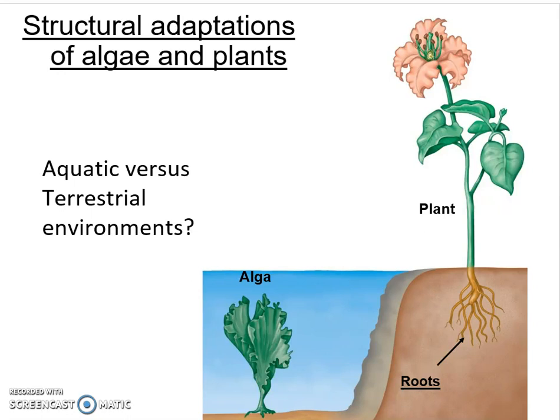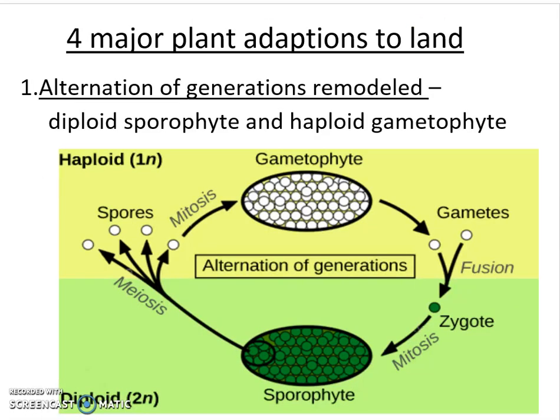At the same time, the support provided by the water for the algae is gone, and you're going to run into a problem with water. You're going to have to come up with adaptations that would allow the algae to survive on land. Looking at the evidence from fossil records and the kinds of organisms we can find today, there are four major adaptations that these algae made when they moved on to land and became the plant kingdom.